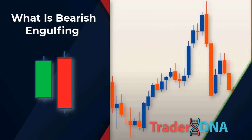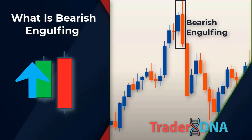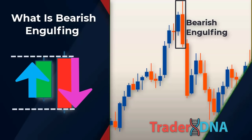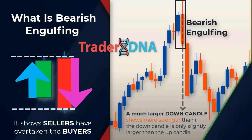The bearish engulfing pattern is a technical chart pattern that signals lower prices to come. It consists of an up candlestick followed by a large down candlestick that eclipses or engulfs the smaller up candle, showing that sellers have overtaken the buyers. The pattern has greater reliability when the open price of the engulfing candle is well above the close of the first candle, and when the close of the engulfing candle is well below the open of the first candle. A much larger down candle shows more strength.